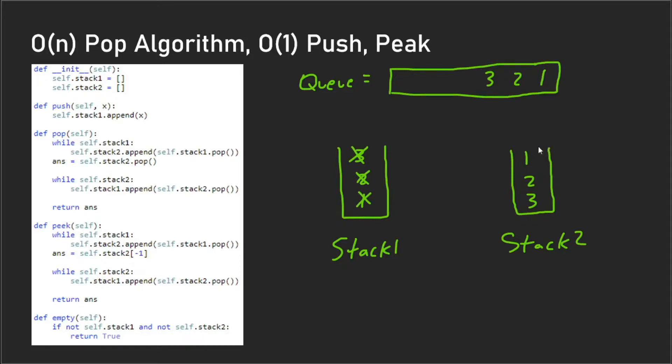And peek is essentially the same thing except you're not actually popping it, you're just getting the last element in the array. So that's why we have the self.stack2[-1] here.